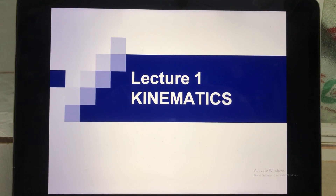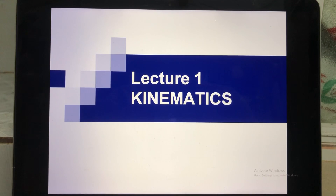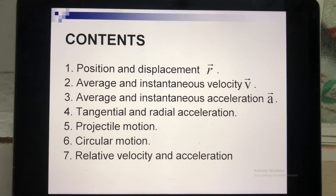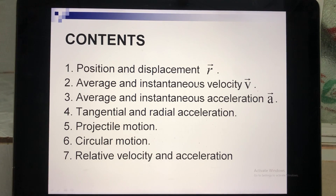The first lecture is kinematics. Kinematics means that we study the motion of an object, but we don't consider the mass and the forces on the object. There are three very important quantities you have to understand clearly: the first one is the position vector r, the second one is velocity v, and the next one is acceleration a. When you understand these three quantities clearly, you can analyze different types of motion — for example, straight motion.